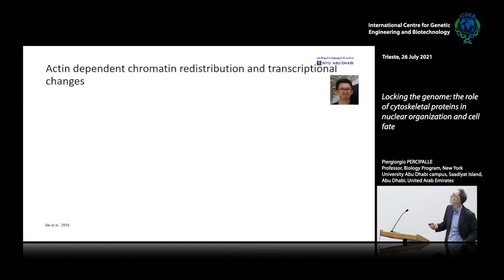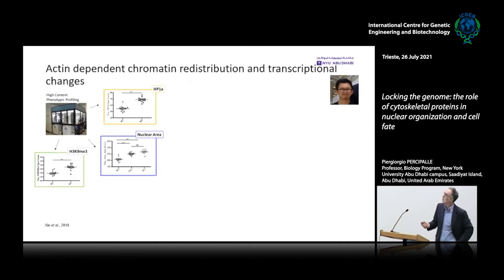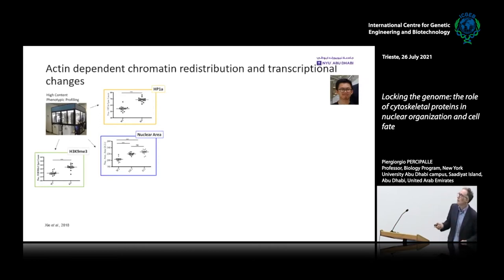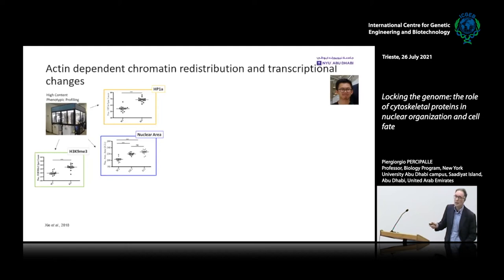When I finalized my move to NYU, I recruited a talented postdoc from Cambridge, Shin. He started wondering whether this effect is limited to the ribosomal DNA transcription unit or is something more general affecting the entire genome. He performed high-content phenotypic profiling using a robotic imaging platform. Labeling cells with H3K9 trimethylation — a repressive mark — and HP1-alpha, you see in the knockout condition a global increase in H3K9 trimethylation and HP1-alpha, the heterochromatin-binding protein.